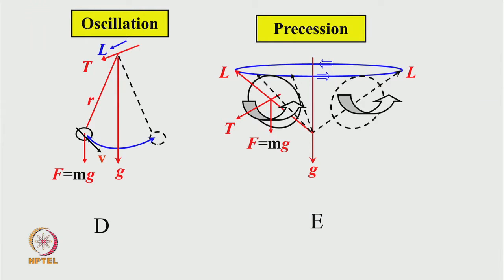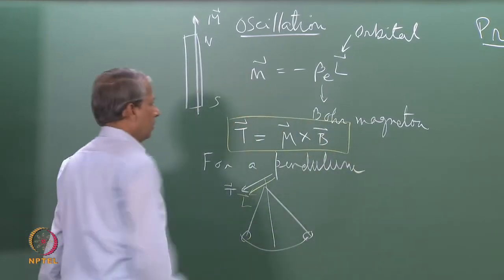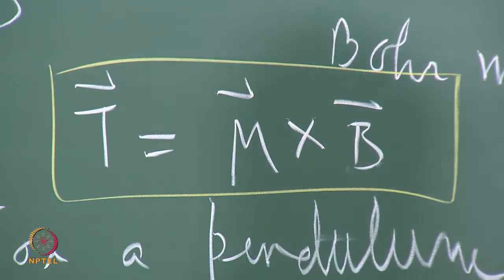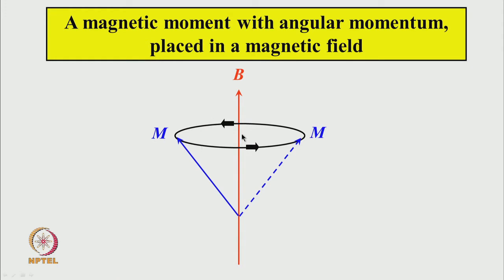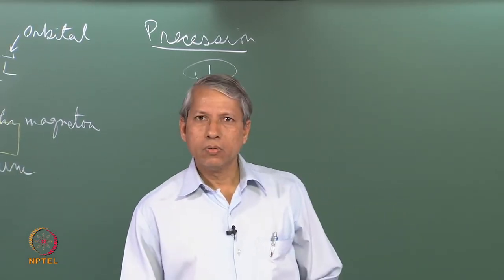Exactly the same thing happens in the case of a magnetic moment kept in a magnetic field when the magnetic moment is arising from its angular momentum. The torque given by m cross B is perpendicular to both m and B. So m is in this direction, B is in this direction, and the torque will be acting perpendicular to m and B. Therefore m will undergo exactly similar precessional motion — the axis of m will follow a cone. So a magnetic moment associated with an angular momentum will undergo precessional motion in a magnetic field.